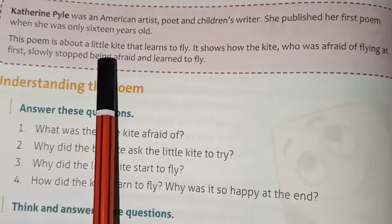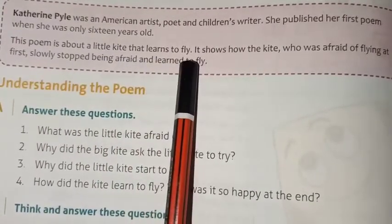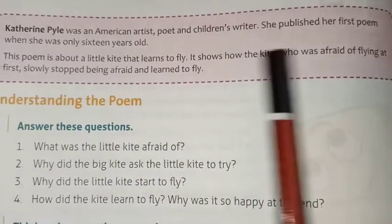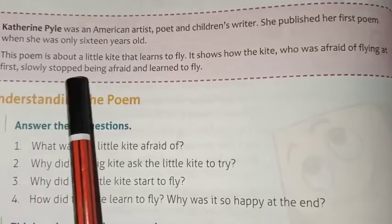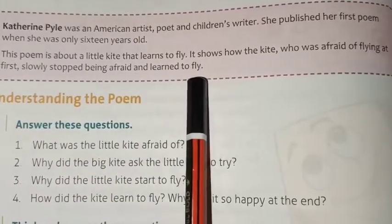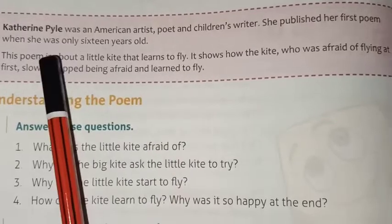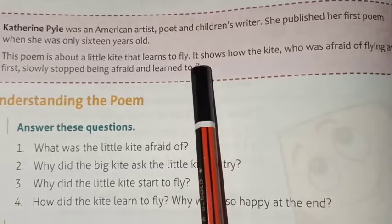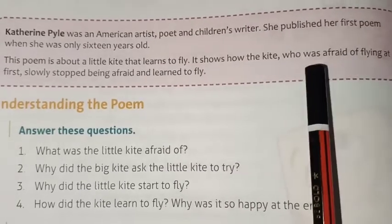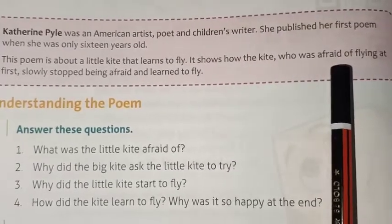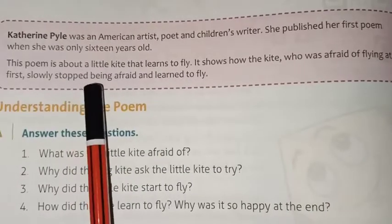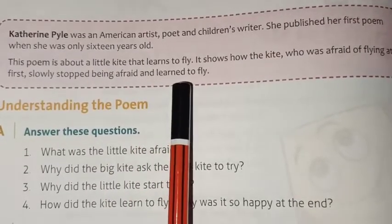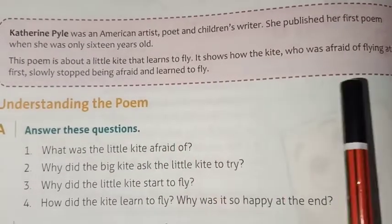This poem is about a little kite that learns to fly. It shows how the kite, who was afraid of flying at first, slowly stopped being afraid and learned to fly. In this poem, we will learn about a little kite — how the little kite learned to fly. Before, the kite was afraid to fly in the sky, but slowly it stopped being afraid and finally learned to fly.